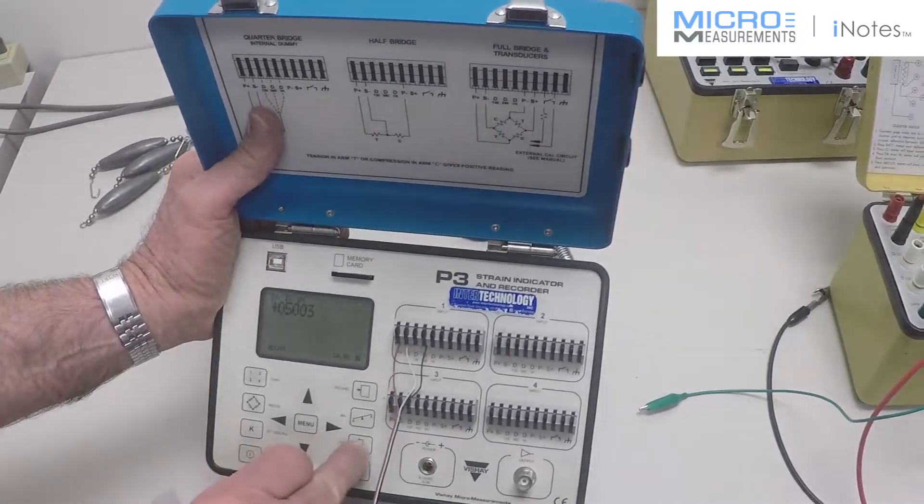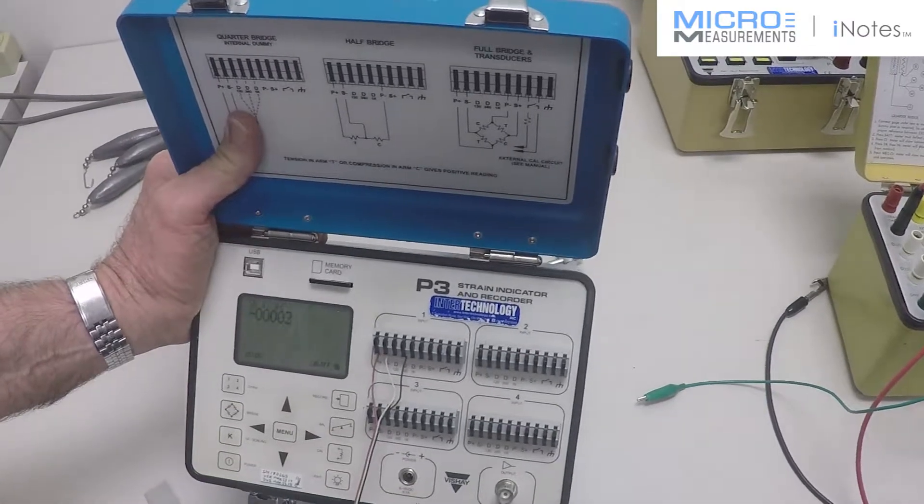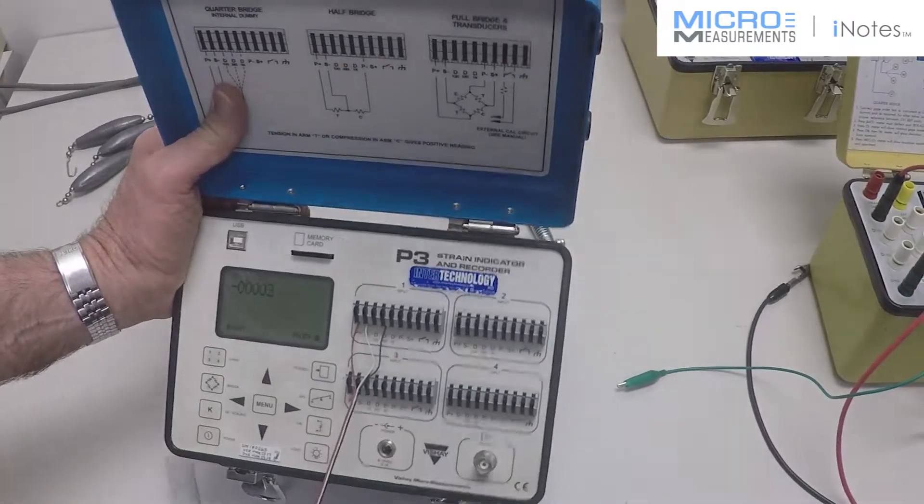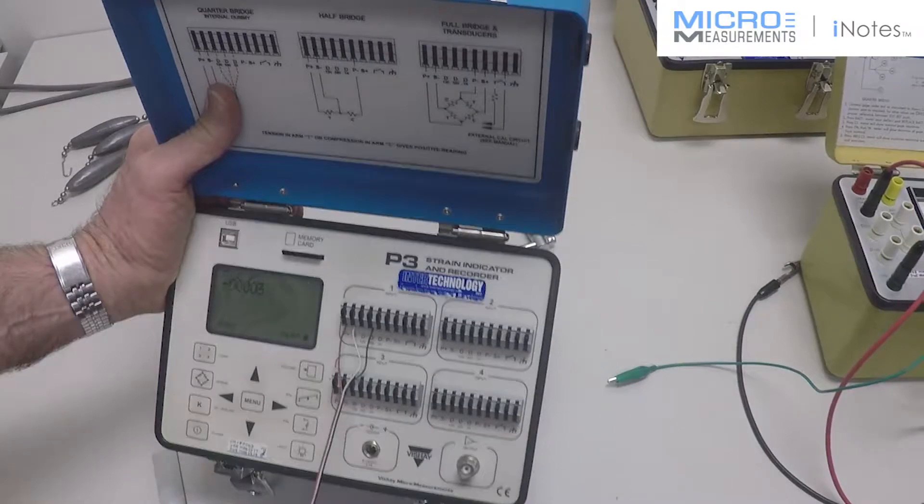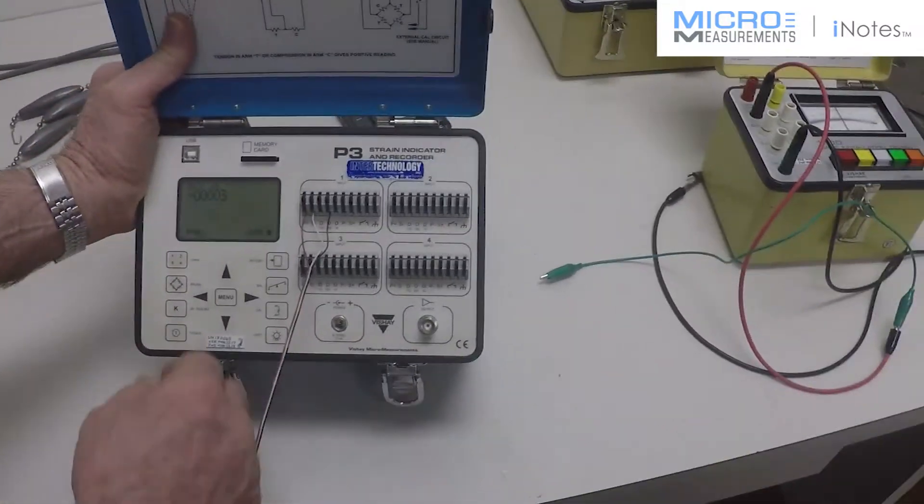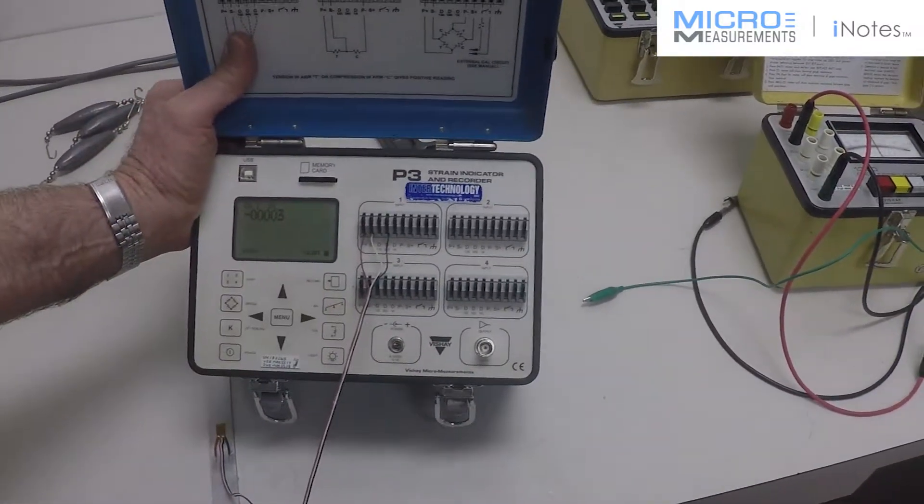So we take off the shunt, we are at zero, and we can now apply load or if you want to record, we can record to the memory card.